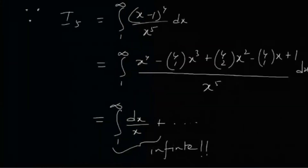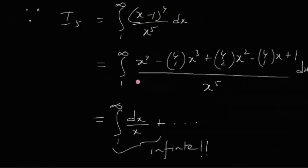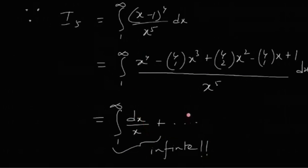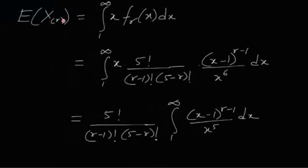But for r = 5: I₅ = integral from 1 to infinity of (x−1)^4 / x^5 dx. Expanding using the binomial theorem, the numerator becomes x^4 − 4x^3 + 6x^2 − ... . Dividing each term by x^5, the leading term gives integral of 1/x dx = log x, which diverges to infinity. So I₅ is infinite. Therefore the expectation E[X_(r)] is finite for r = 1, 2, 3, or 4, but infinite for r = 5.